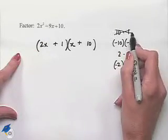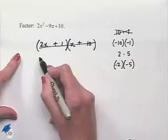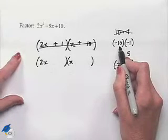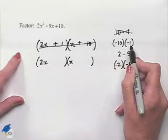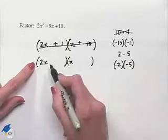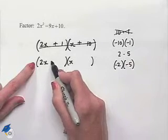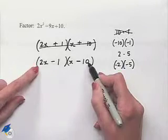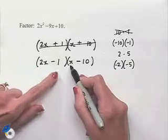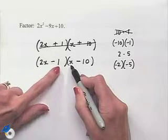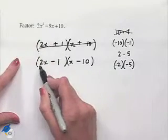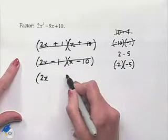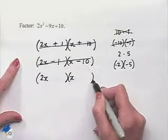What if we chose to use the factors negative 10 and negative 1? For similar reasoning, we can't put the negative 10 with the 2 or else we'd have common factors. If we have a negative 1 here and a negative 10 there, our outer term would be negative 20, our inner term would be negative 1, and that's not what we're looking for. So we're going to eliminate that from our choices and move on.